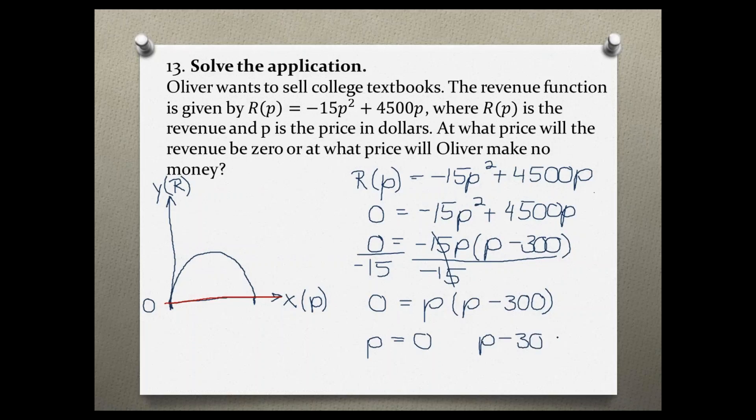So solving for p, adding 300 to both sides, we have p equals 300. So right here our p is 0, and right here our p is 300 dollars.